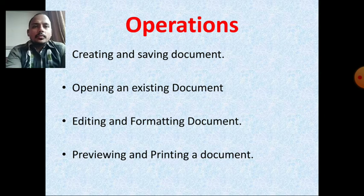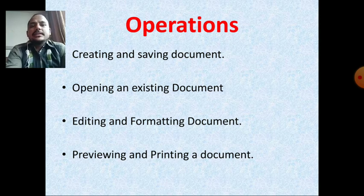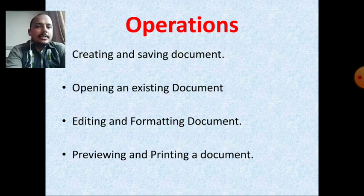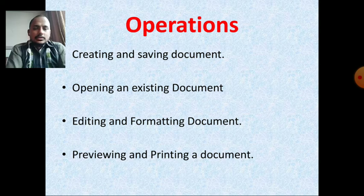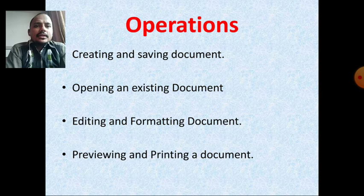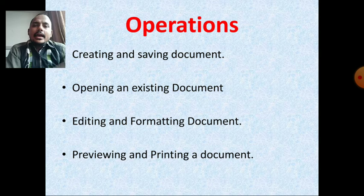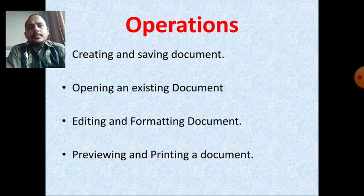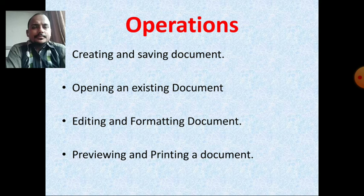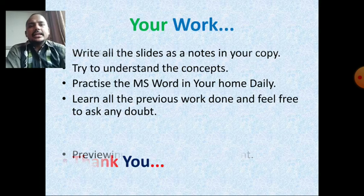What kind of operations can we do in MS Word? We can use it for creating and saving documents, opening an existing document, editing and formatting a document, and previewing and printing our document. You can create a document and save it; you can open an existing file easily; editing and formatting means you can edit or change parts according to your need; and you can preview and print the document as well.